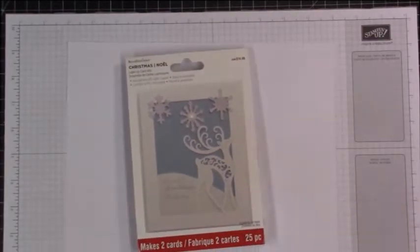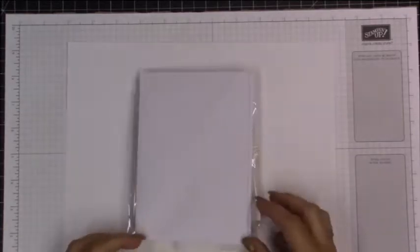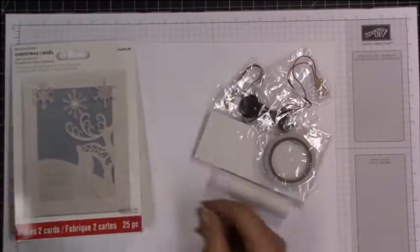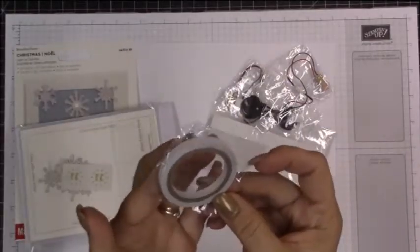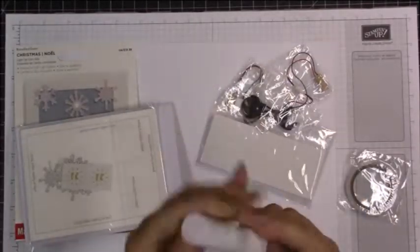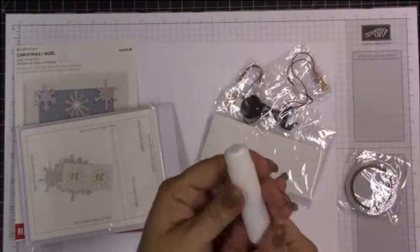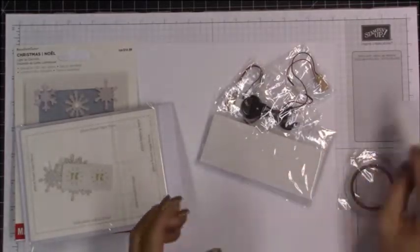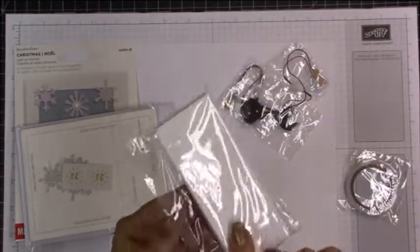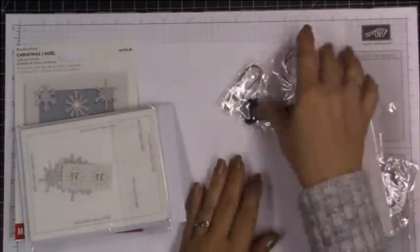I'm just going to take everything out here and review what the contents are. So you have two envelopes, you have a roll of double sided tape, a glue stick which I did not use. You have some really large thick foam squares, just long strips.